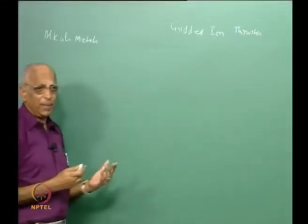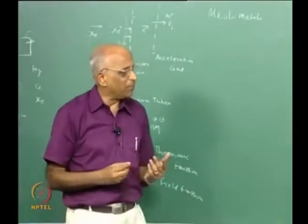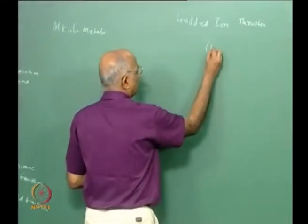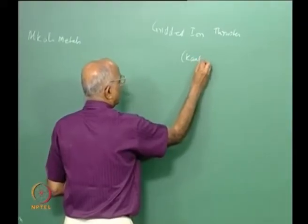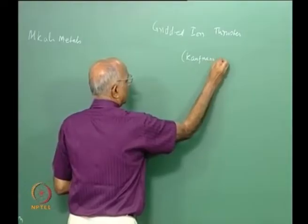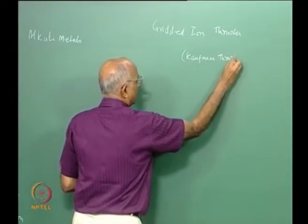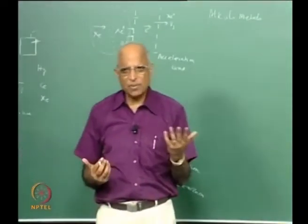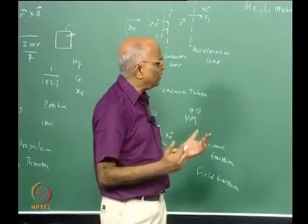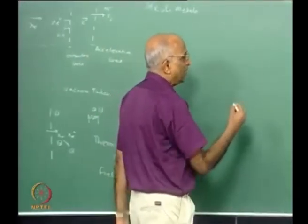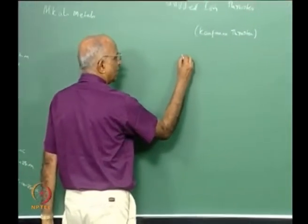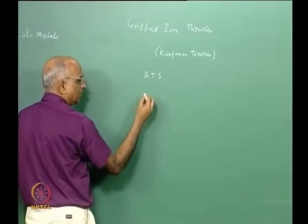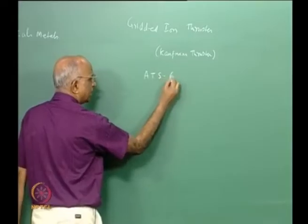This was started by a person known as Kaufman, and therefore it is also known as the Kaufman thruster. This ion thruster has been used in several machines starting from even the mid-1970s. In India we used a particular satellite known as Application Technology Satellite ATS-6, made in the USA by Hughes Corporation.